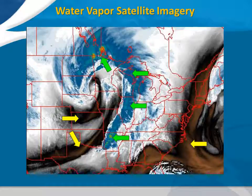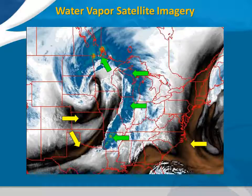Water vapor imagery is also useful for pinpointing circulations within the atmosphere. Here we can see a powerful spring storm centered over southeastern South Dakota, with a lot of mid and upper level moisture wrapping into it. Meanwhile, the atmosphere over much of the east coast is quite dry.